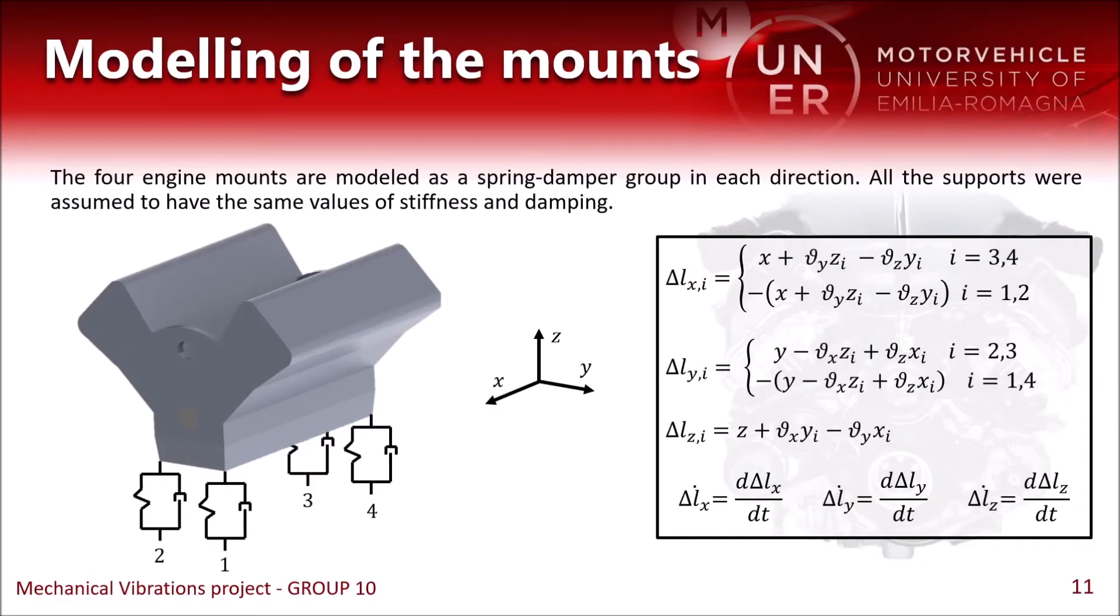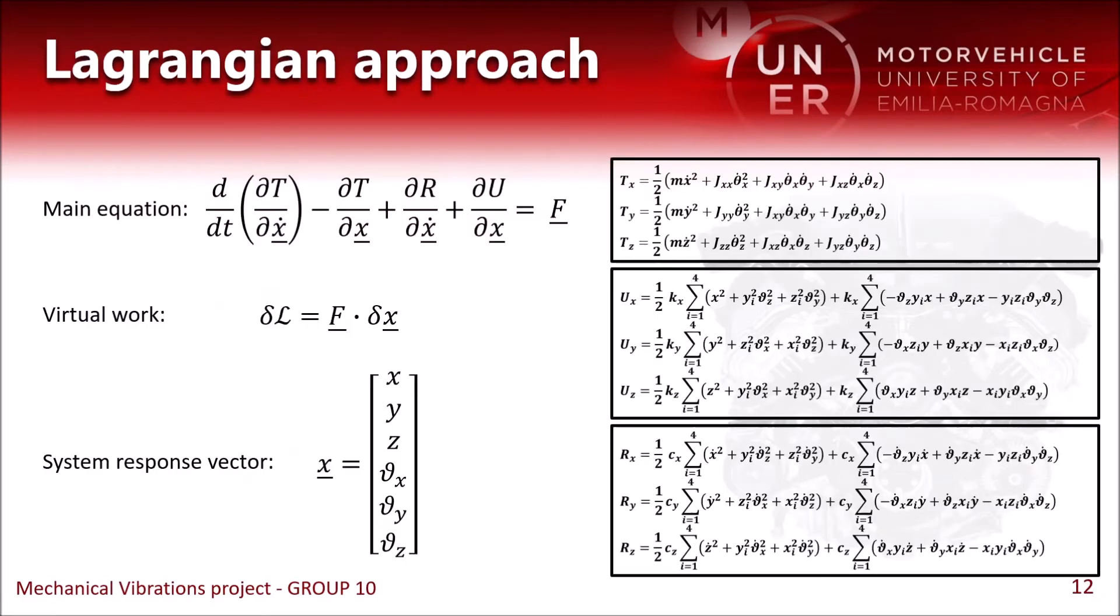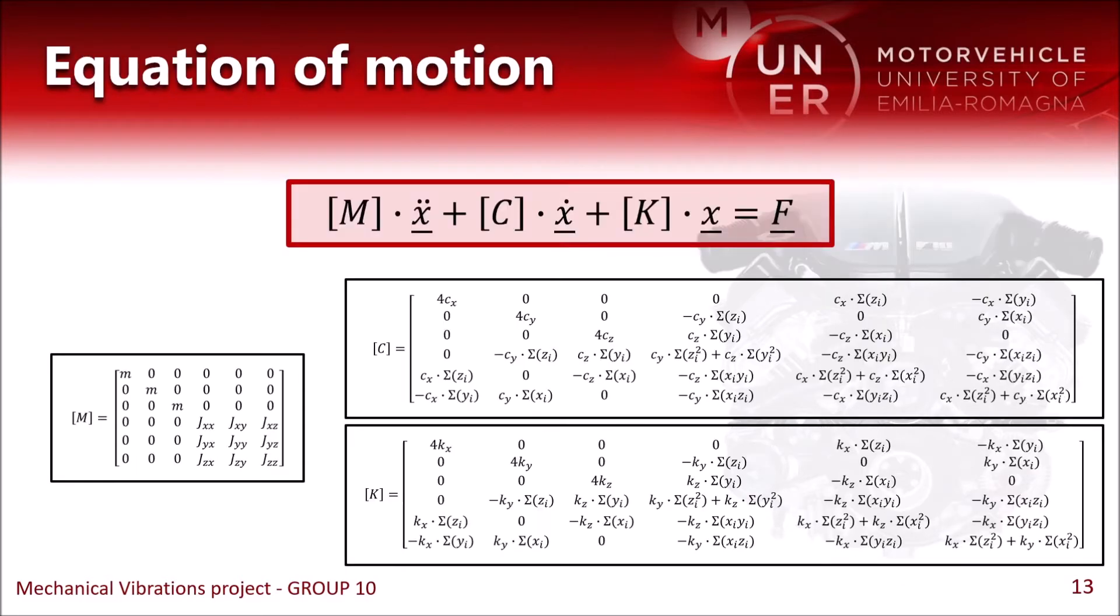Here we have our engine model supported by the four engine mounts. We assumed all the mounts to be equal. To derive the equation of motion, we start from the Lagrange equation. Here we have the expressions of the kinetic energy, the potential energy and of the non-conservative forces. And this is the equation of motion in matrix form. We can see that the stiffness and damping matrices have the same shape, and we also have some null elements, meaning that some degrees of freedom are decoupled.